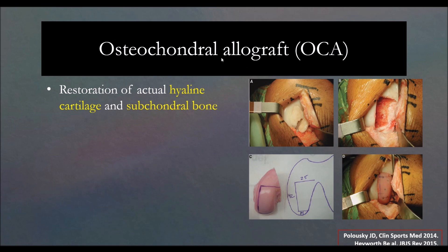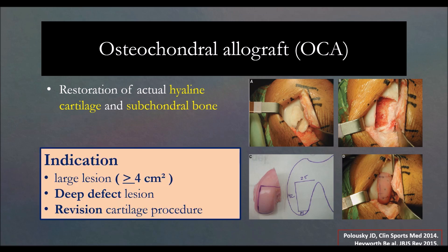The next step is osteochondral allograft. We use it for very big lesions. If you have a fresh osteochondral allograft, that is very good. It can be used for big lesions, deep lesions, and revision surgery, and restores hyaline cartilage. It is best with fresh grafts — when a patient donates organs, you can harvest the cartilage at the same time and do emergency cartilage surgery.